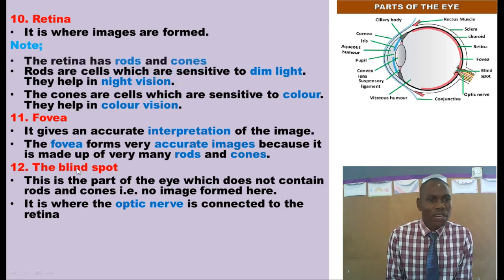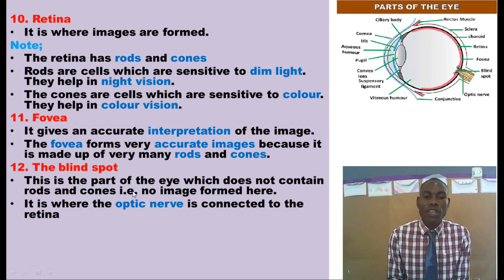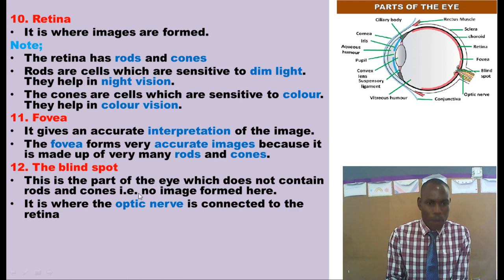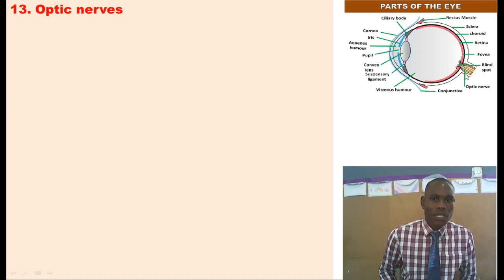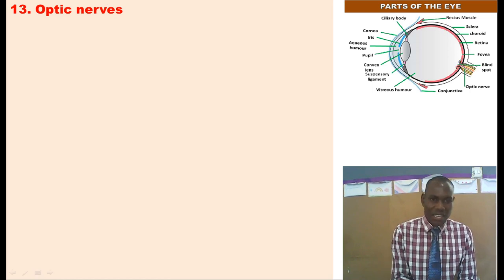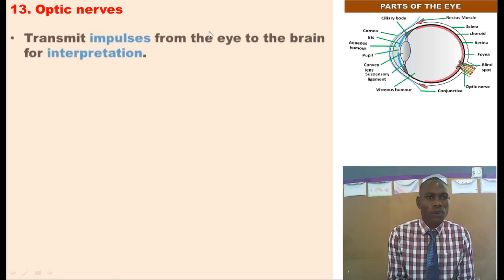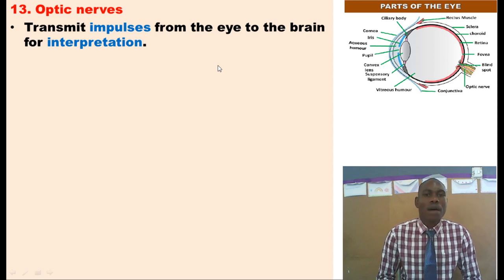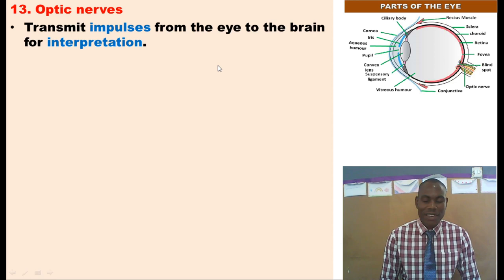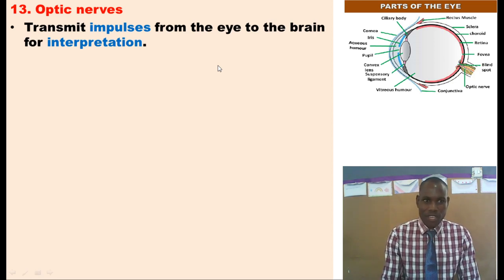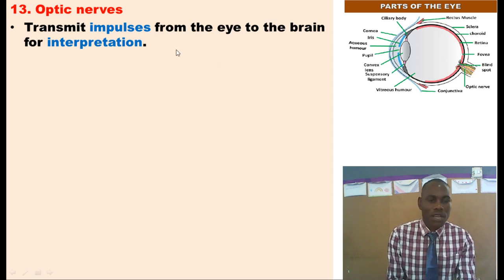Let us look at the blind spot. The blind spot is the part of the eye which does not contain rods and cones, so no images are formed on the blind spot. It is where the optic nerve is connected to the brain. The optic nerves are responsible for transmitting or carrying nerve impulses from the eye to the brain. The reason impulses are carried from the eye to the brain is for interpretation. So, optic nerves transmit impulses from the eye to the brain for interpretation.